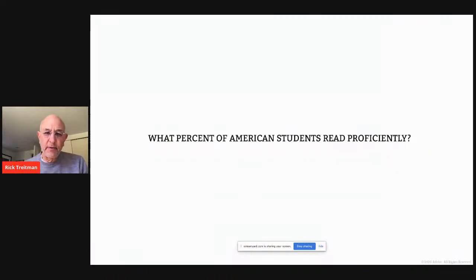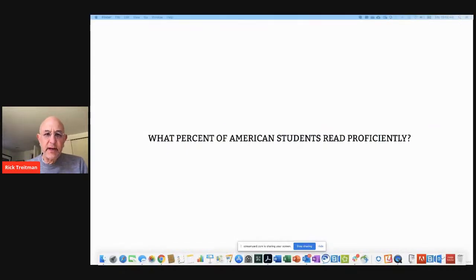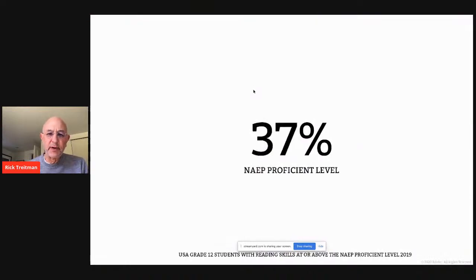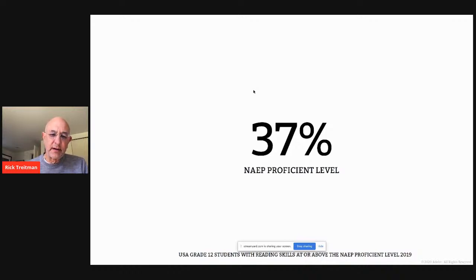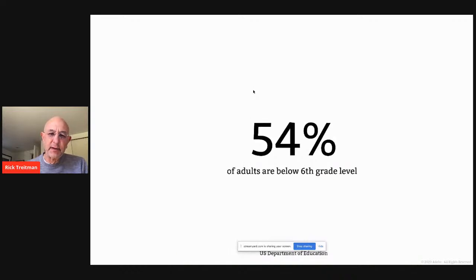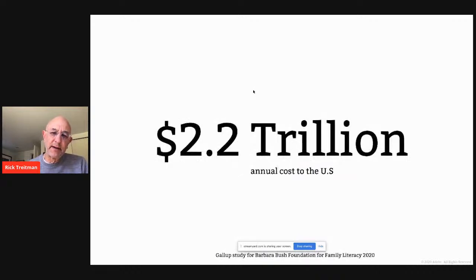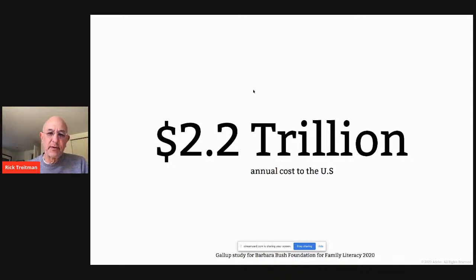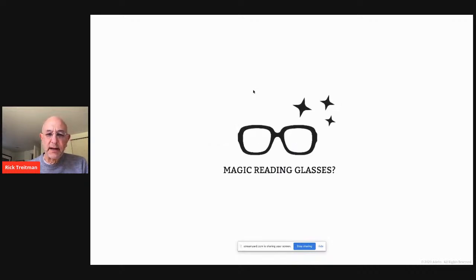We're tackling this larger problem of students not being able to read. Looking at American percentages of kids reading at level: only 54% of adults are reading below the sixth grade level, and it's a $2.2 trillion annual cost. The question is how do we address this problem and make it better.